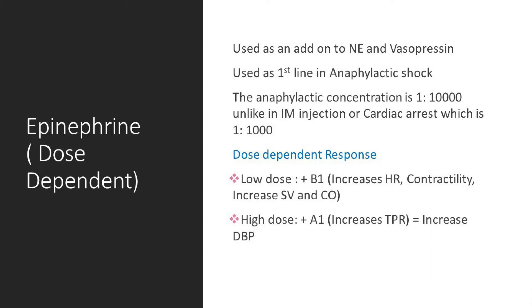At low dose epinephrine, you get beta-1 stimulation — increased heart rate and inotropy — but you may not see a significant increase in blood pressure because you're not getting alpha-1 vasoconstriction yet. High dose epinephrine causes alpha-1 stimulation, which is the alpha-1 squeeze you need to increase blood pressure. So if you want higher blood pressure, use high dose epinephrine; if you want inotropy or heart rate increase, use low dose. The key point: epinephrine has a dose-dependent response.